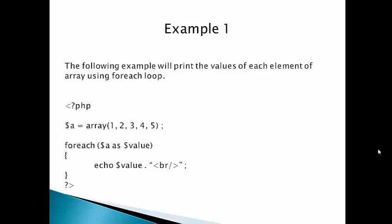We have curly braces for the loop body. In the first iteration, the value 1 is assigned to the $value variable and printed. In the second iteration, the second element's value 2 is assigned to $value and printed. In the third iteration, the value 3 is assigned to $value and printed. This cycle continues until the array ends.